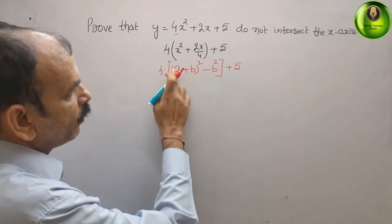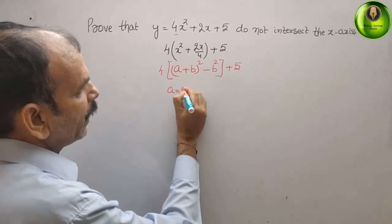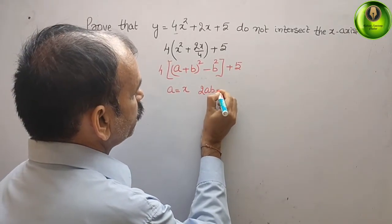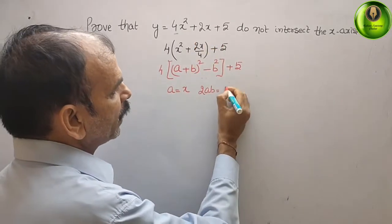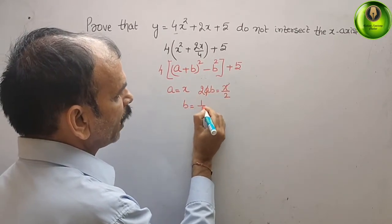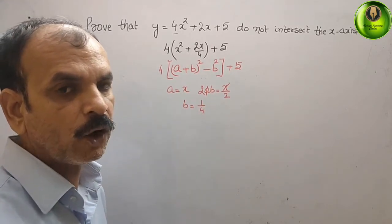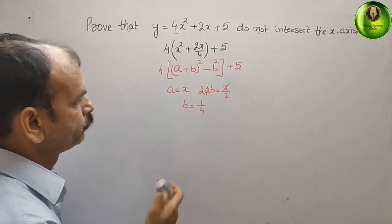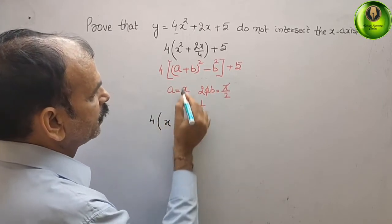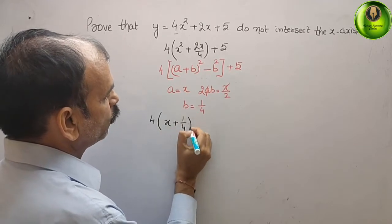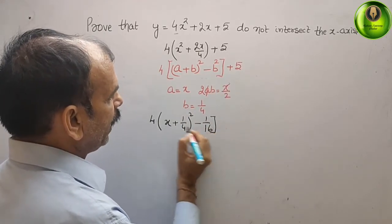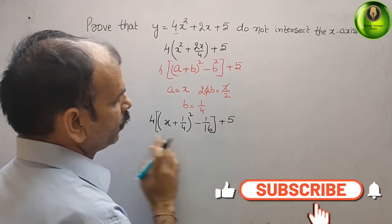Comparing a² with x² gives us a = x. Looking at the center term 2ab = 2x/4, we can find b. Cutting through, we get b = 1/4. Now substitute this value: inside the bracket we get x + 1/4 whole square, then minus b² which is 1/16.